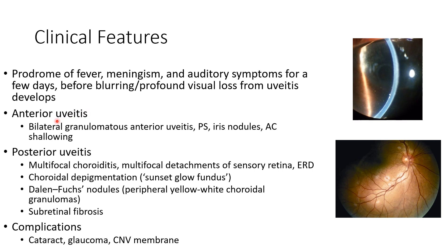Let us discuss the clinical features of anterior uveitis in VKH disease. There will be bilateral granulomatous anterior uveitis during the uveitic stage. This picture shows keratic precipitates seen in a case of VKH disease. There can be posterior synechiae, iris nodules, and anterior chamber shallowing.